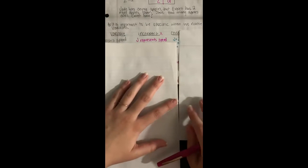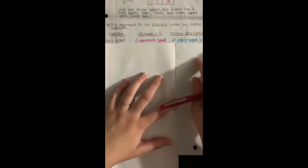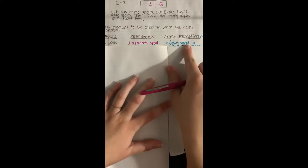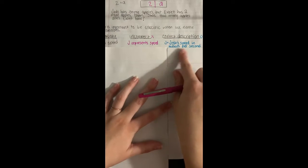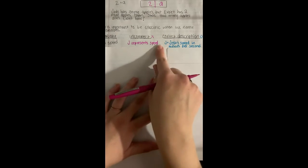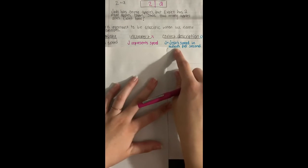The correct way to describe that variable would be by saying J is going to be Josh's speed in meters per second. Do you see how that's a lot more specific than just saying speed? I'm telling you how I'm gonna be measuring the speed.